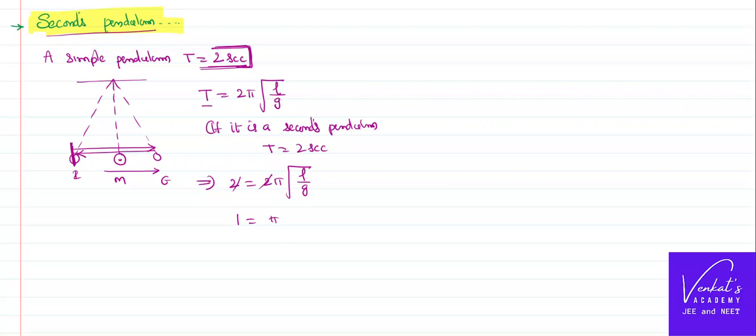1 equals π times root of l by g, square that. 1 equals π² times l by g. We know the value of g is 9.8 meter per second square on SI system.